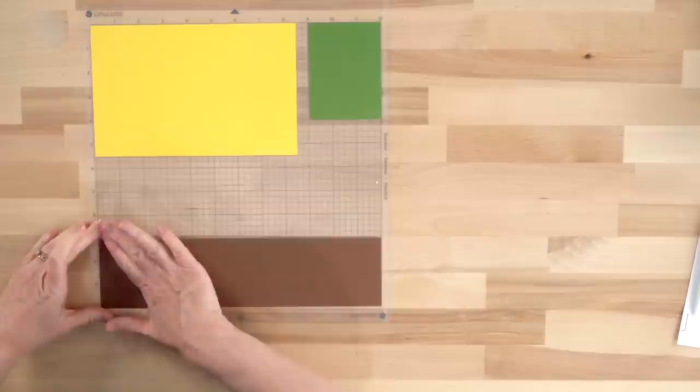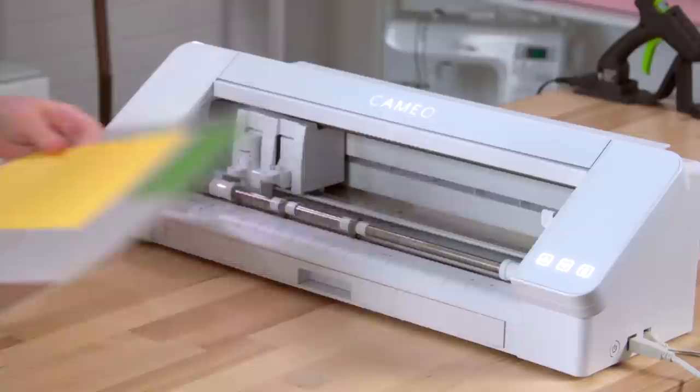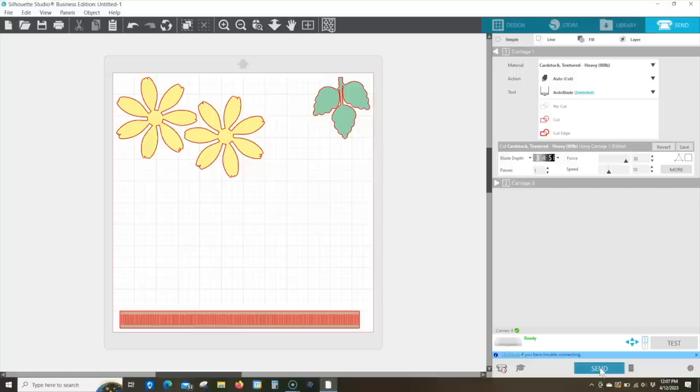And then my brown piece of paper is going to go across the bottom. It's always good to make sure you have enough paper to match up with where you have placed it on your virtual cutting mat, so it cuts in the right place. So now we'll just load this. Line up the left edge of the mat with the cutting guide, and now I can just click Send.